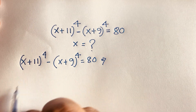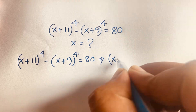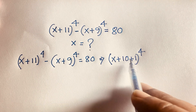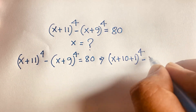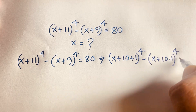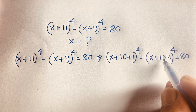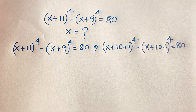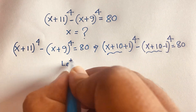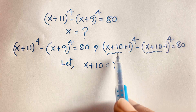Looking at this question, I can see that x + 11 can be written as (x + 10) + 1, whole to the power 4. And x + 9 can be written as (x + 10) − 1, whole to the power 4. I take x + 10 as the common middle term. So let x + 10 = y.